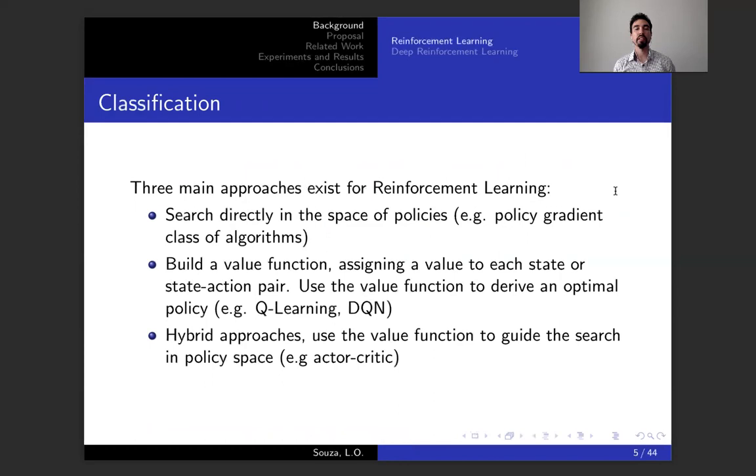There are three main approaches for reinforcement learning. You can either search directly in the space of policies—policy gradient algorithms. Or you can build a value function where you assign a value to each state or state action pair and use the value function to derive an optimal policy. The most common algorithms, Q-learning belongs to this class. And we also have hybrid approaches like actor-critic algorithms.